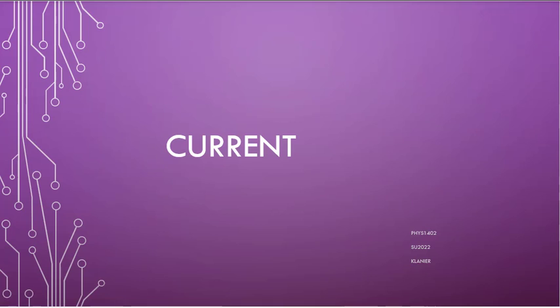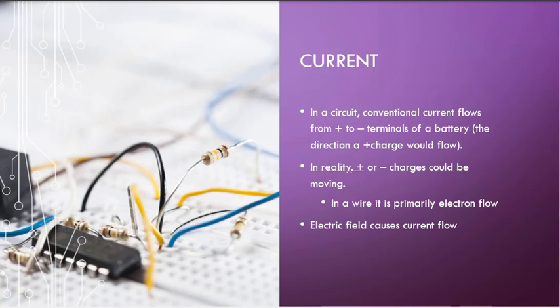All right, so we're going to talk a little bit about current, and this is leading into how circuits work. Basically, we're going to define current to be the charge that flows in a conductor. So in a circuit, conventional current flows from the positive terminal to the negative terminal of the battery. And if you think back to electric fields, that's the direction that a positive charge would flow. And this was actually defined by Benjamin Franklin before we knew anything about charges.